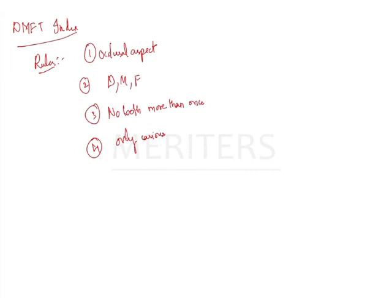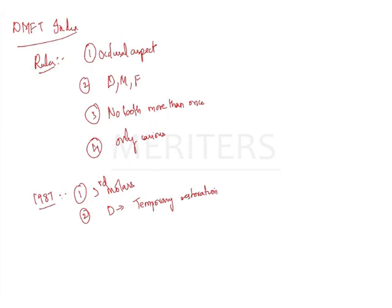What is the WHO modification of 1987? There were three modifications. First, all third molars are included. Second, temporary restorations are considered as decayed. Third, only caries cavities are considered as D.